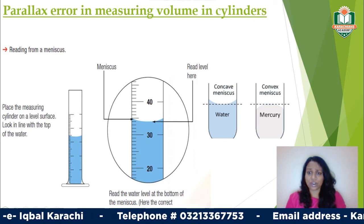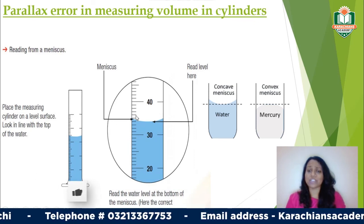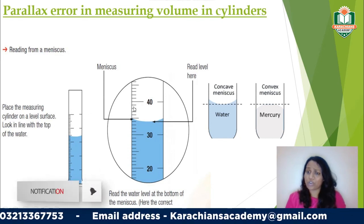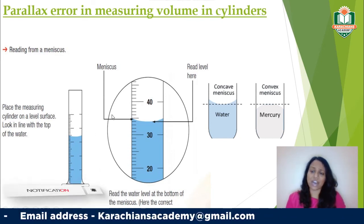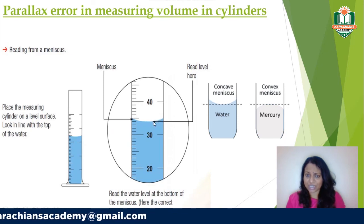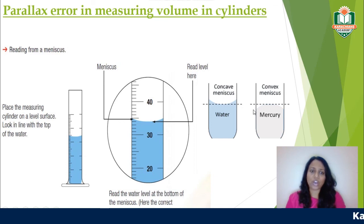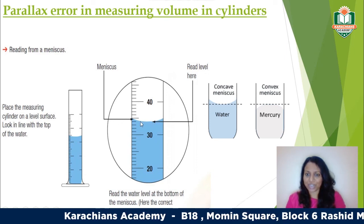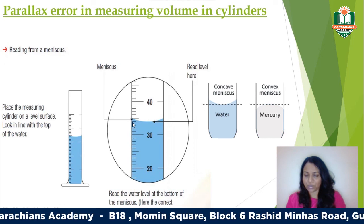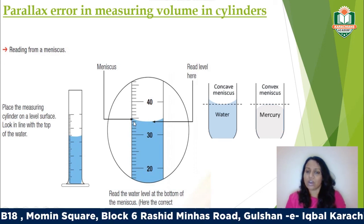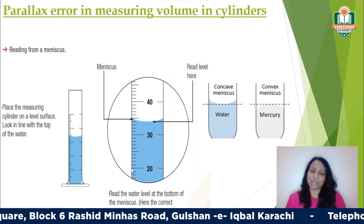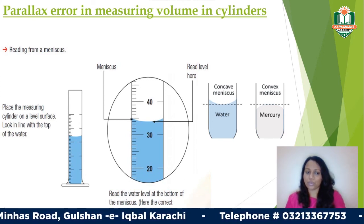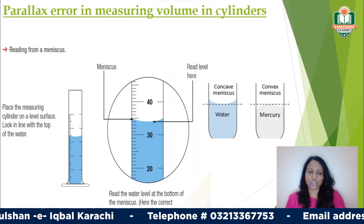Another error that occurs while taking these readings is parallax error — this happens when you're not looking at right angles to your reading. For measuring cylinders, you must measure the meniscus level. The meniscus is the curved shape of the liquid surface — it can be a lower or upper meniscus depending on the liquid. Keep your eye at right angles to the scale. For example, a reading may look like 35 cm³ from an angle but is actually 34 cm³. That's it for now — hope to see you again soon.